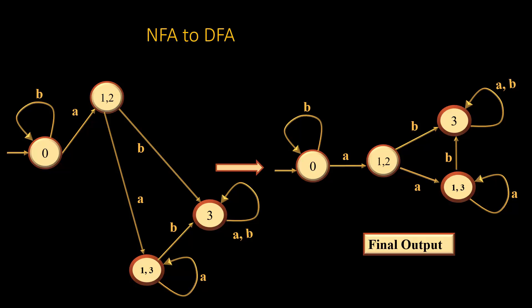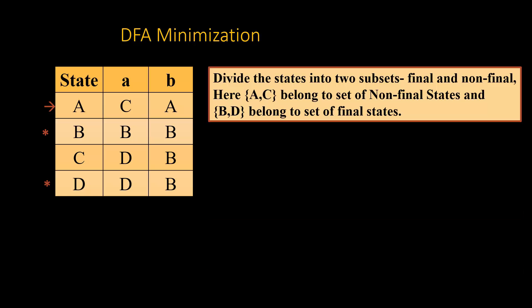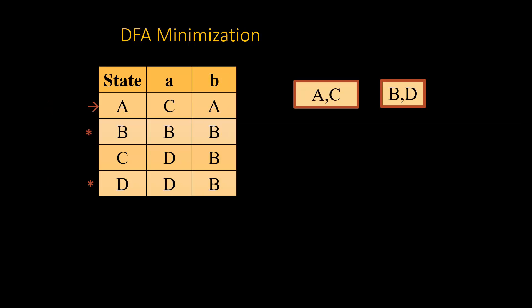The second step is to minimize this DFA. In order to minimize it, we rename the states as A, B, C, D. We then divide this set of states into two subsets: the set of final states and the set of non-final states. In this case, {A, C} are non-final states and {B, D} are final states.